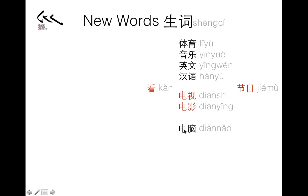Next one — this one I've already learned. What is 电脑? 电脑 — that's the brain powered by electricity. This is the computer.